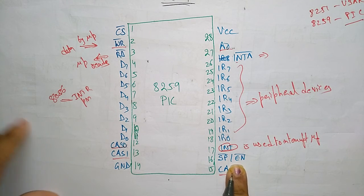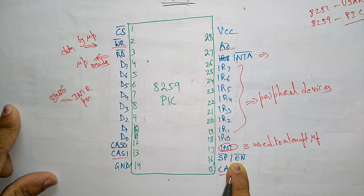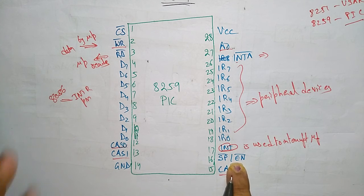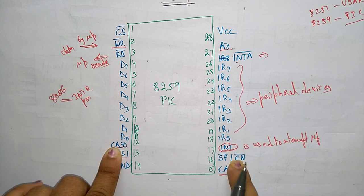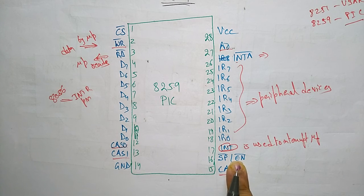SP/EN: this function is used in conjunction with the CAS signals for cascading purpose. So whenever these are used in cascading purpose, then this pin will be helpful in conjunction with all these cascading signals.